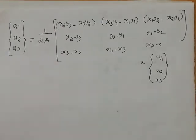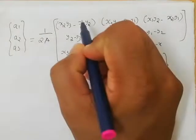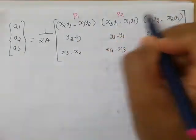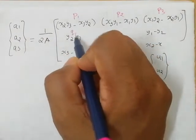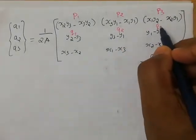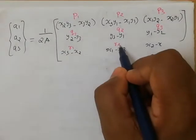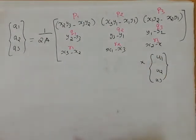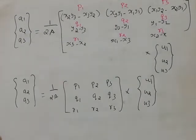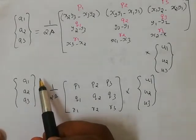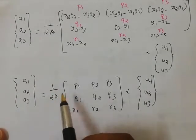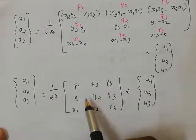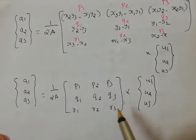We will substitute the matrix [A1, A2, A3] as equal to 1 by 2A times the matrix containing P1, P2, P3, Q1, Q2, Q3, R1, R2, R3 multiplied by the nodal displacement matrix [U1, U2, U3].